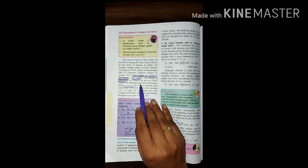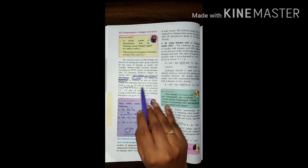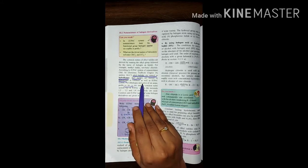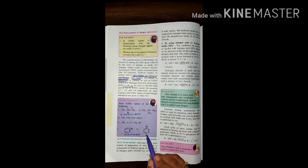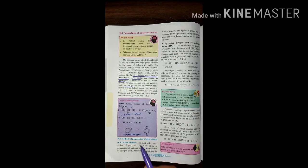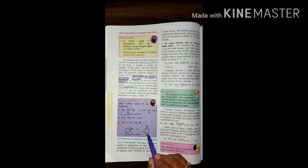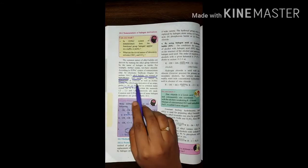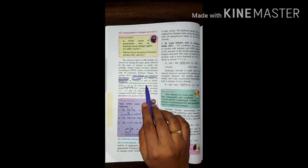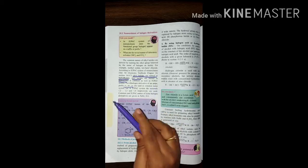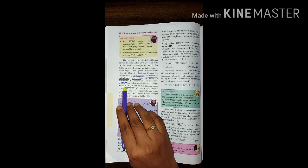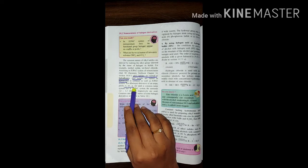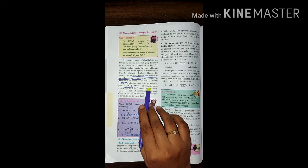For dihalogen derivatives of arene, the prefix will be ortho-meta-para. Dihalogen means two halogens attached to the aromatic group. So for dihalogen derivative of arene, we use prefix ortho which is denoted as o, meta denoted as m, and para denoted as p. These are used in common names.